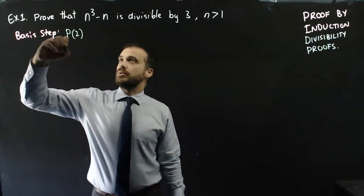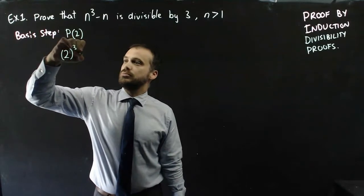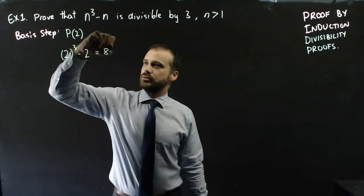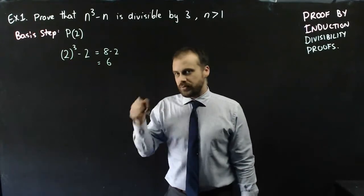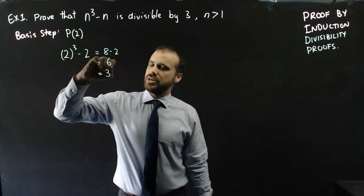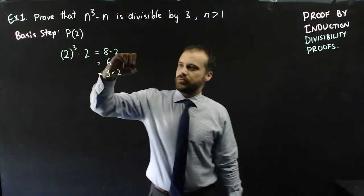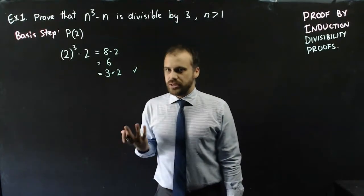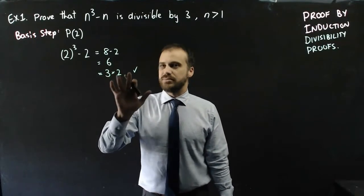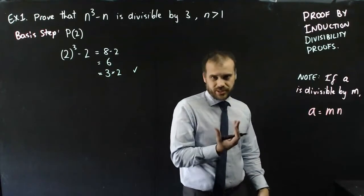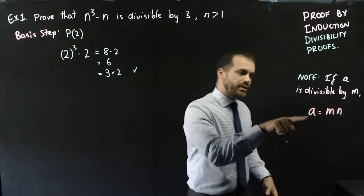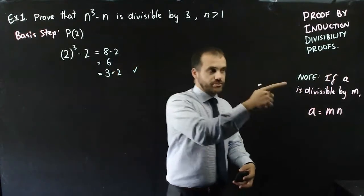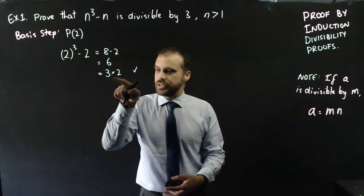So let's put it in: 2 cubed minus 2 equals 8 minus 2, which equals 6. I'm going to express 6 as 3 times 2, and then I can say that's divisible by 3. The reason I've done that is because if something's divisible by 3, it can always be expressed as 3 times something. If a is divisible by m, then a can be expressed as m times n. In this case, if 6 is divisible by 3, it can be expressed as 3 times 2.